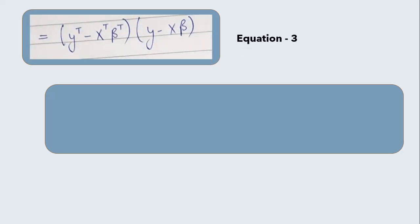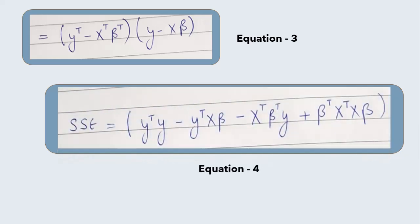Now replacing e with y minus x beta in equation 2, the sum of the squared error is rewritten as shown on the screen. Let's expand this equation by transposing the first element of sum of squared error term and then we will multiply the terms to get rid of brackets. Now we have final equation 4: y transpose y minus y transpose x beta minus x transpose beta transpose y plus beta transpose x transpose x beta.